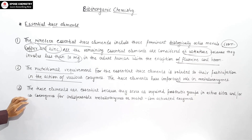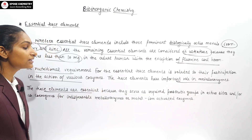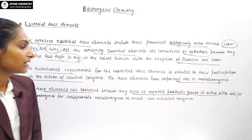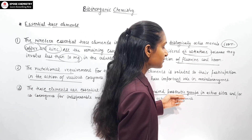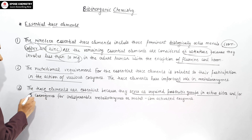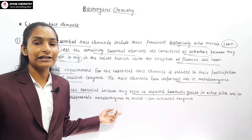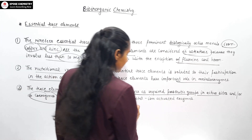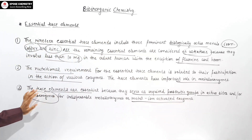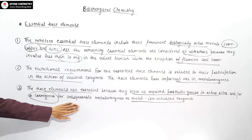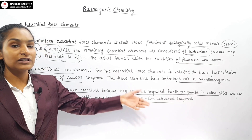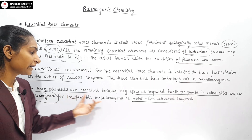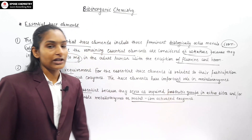Trace elements are essential because they serve as required prosthetic groups in active sites, and are required as coenzymes for indispensable metalloenzymes and metal ion activated enzymes.